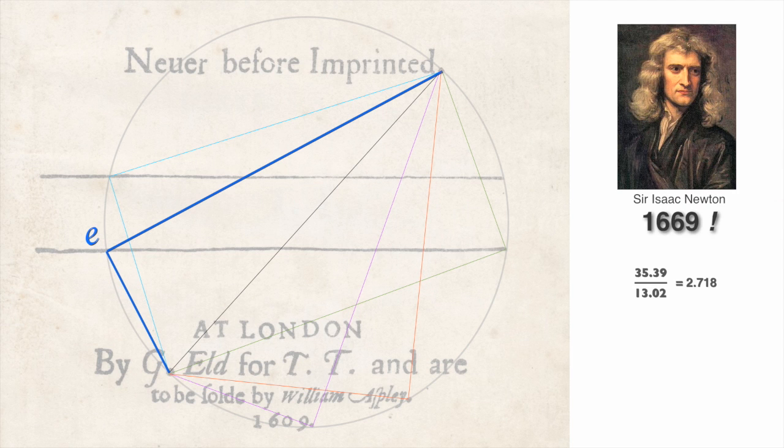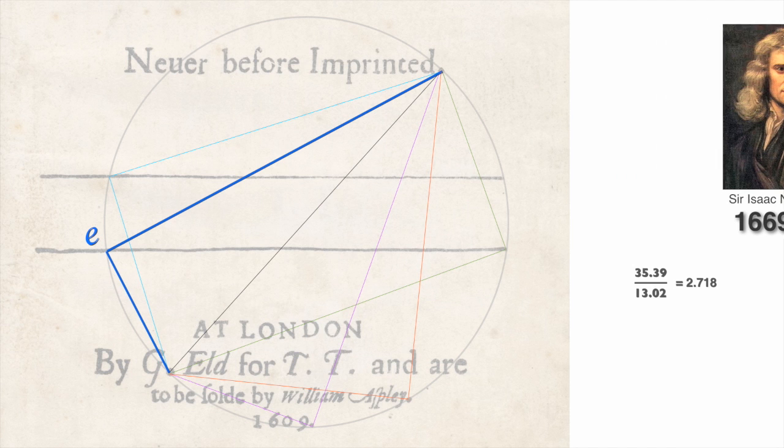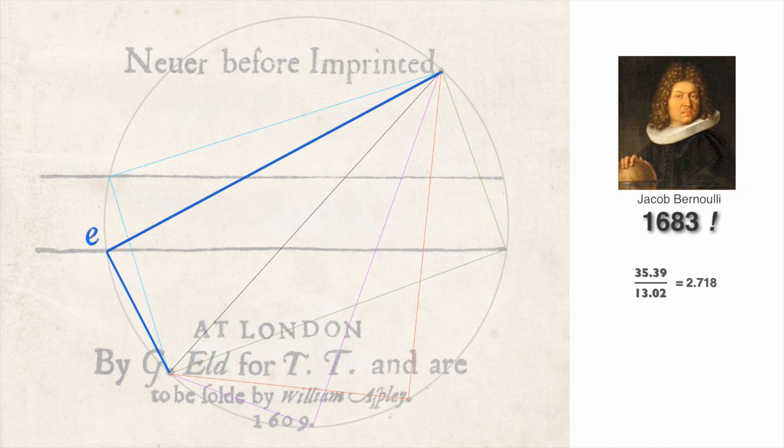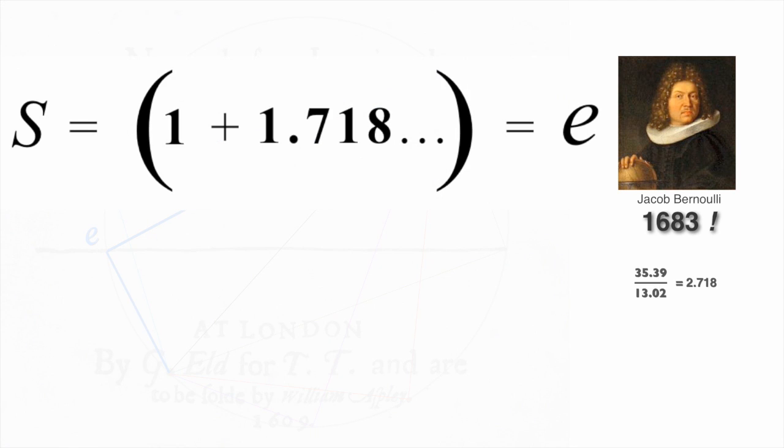Sir Isaac Newton, in 1669, found it as he was inventing calculus. Jacob Bernoulli, in 1683, was studying a problem we all can relate to, money and compound interest. And he came up with a simple equation. It's the same formula used by banks today to calculate how much we owe on our credit card bill.